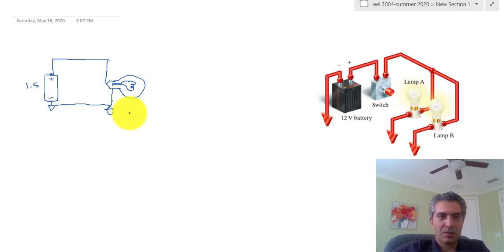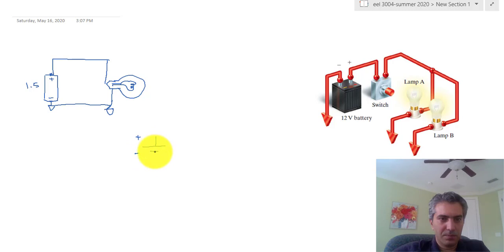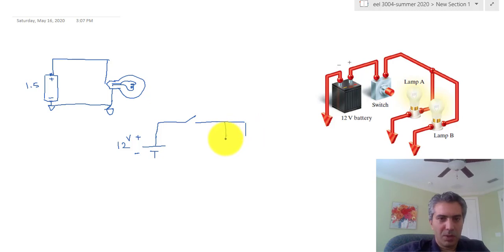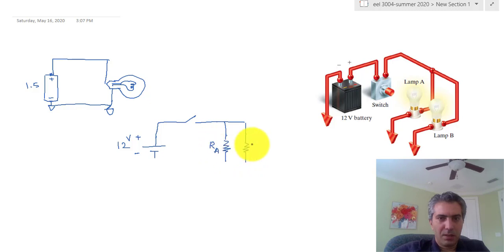To show this circuit with symbols: the battery can be represented with its symbol — the positive terminal and the negative terminal — representing 12 volts. A wire from the positive terminal goes to a switch, shown with its switch symbol, and then the circuit splits into two wires, each going to a light bulb. Each light bulb can be represented as a simple resistor — resistor A for light bulb A and resistor B for light bulb B.